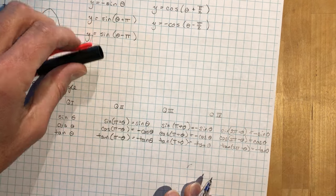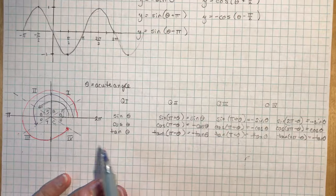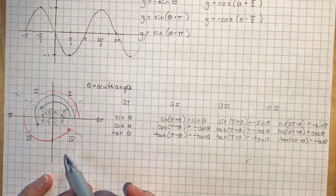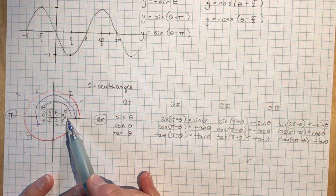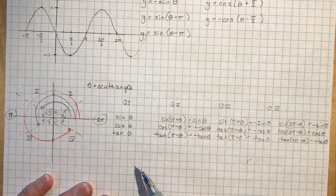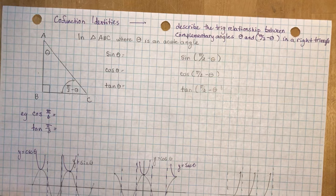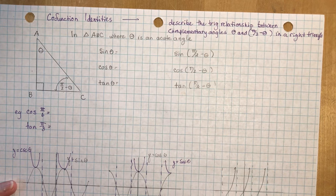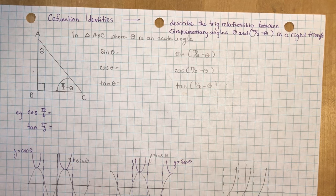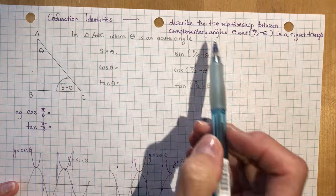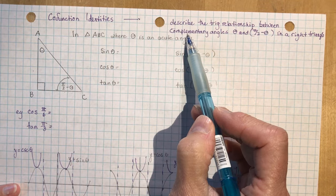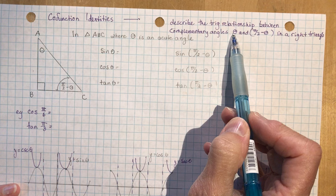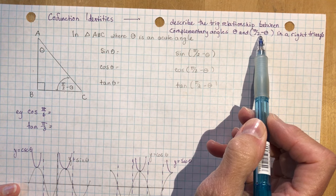Let's go into something a little trickier that you hadn't seen before — co-function identities. A co-function identity describes the trig relationship between the complementary angles theta and pi over two minus theta.